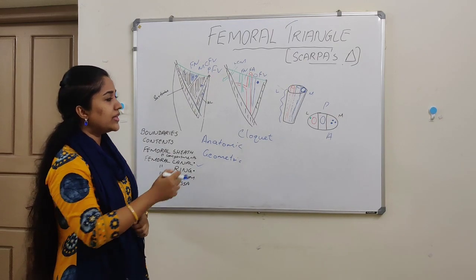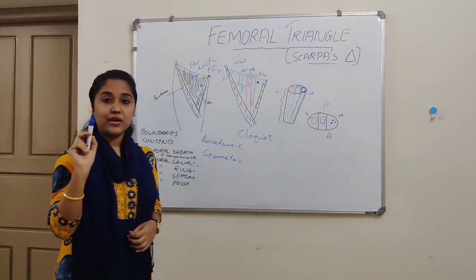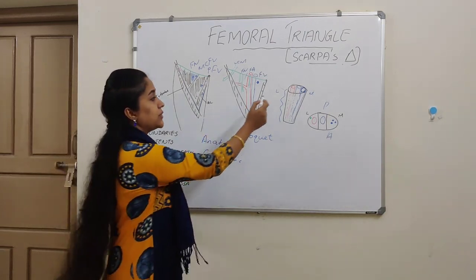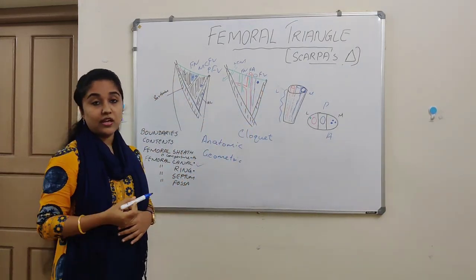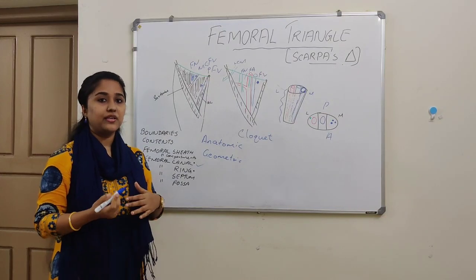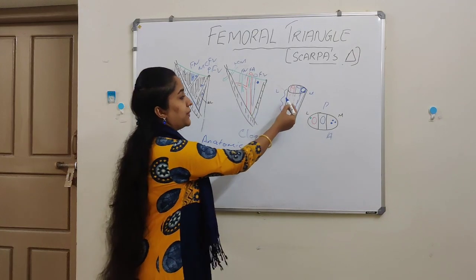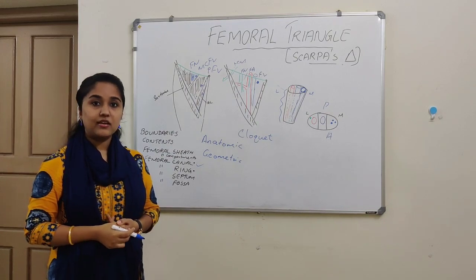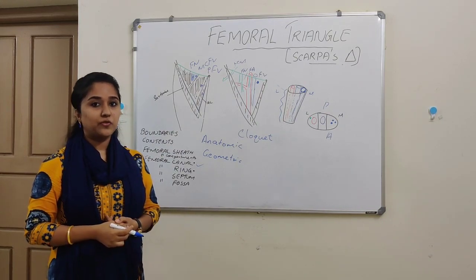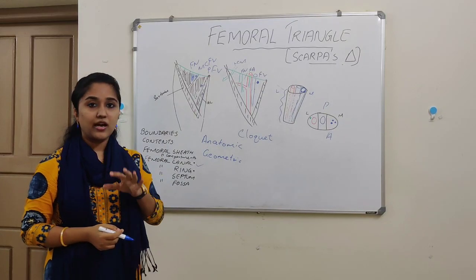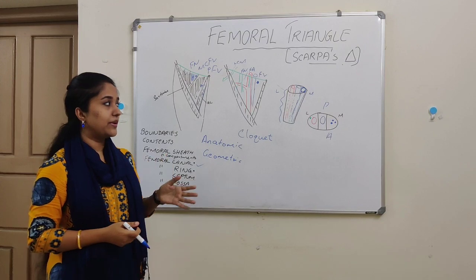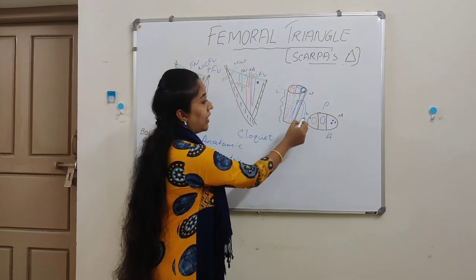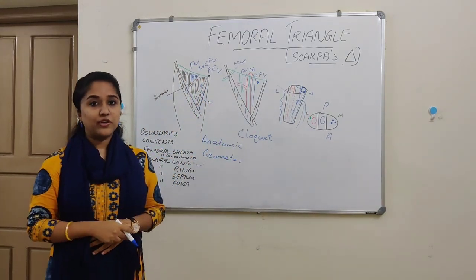The femoral sheath is pierced by some structures: laterally, it is pierced by the femoral branch of the genitofemoral nerve; anteriorly, it is pierced by three superficial branches of the femoral artery — the superficial circumflex iliac, superficial external pudendal, and superficial epigastric arteries; and medially, it is pierced by the great saphenous vein on its way to enter the femoral vein.